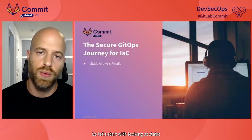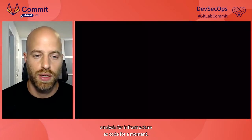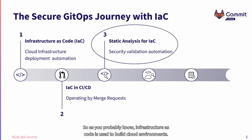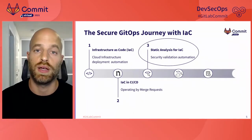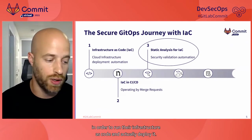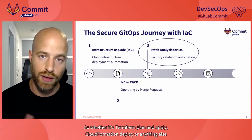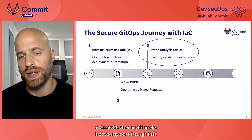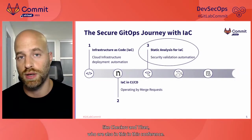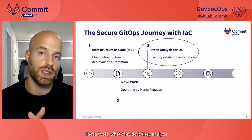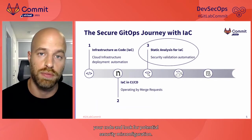Let's start with looking at static analysis for infrastructure as code. Infrastructure as code is used to build cloud environments — teams all over the world are using it to design, define, and deploy the cloud environments they use. They wrap it in CI/CD, for example using GitLab pipelines to run their infrastructure as code and deploy it — whether that's Terraform plan and apply, CloudFormation deploy, or anything else. The next step is adding static analysis, so tools like Checkov and tfsec.